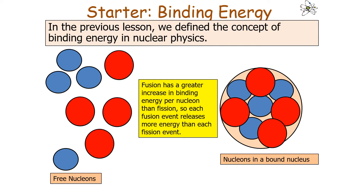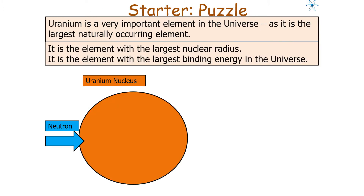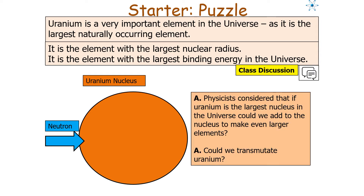Uranium is a very important element — it's the largest naturally occurring element, with the largest nuclear radius and the largest binding energy in the universe. Physicists considered that if uranium is the largest nucleus, could we add to it to make even larger elements? Could we transmutate uranium?